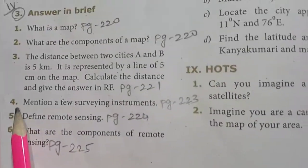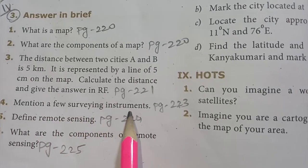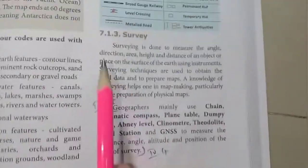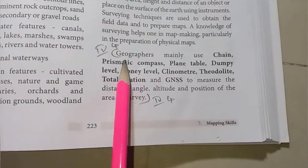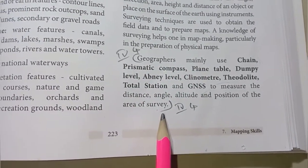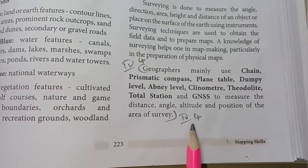Then fourth one, mention a few surveying instruments. Page number 223. Surveying instruments, survey paragraph in the second paragraph, geographers mainly use. Area of survey. Roman numeral fourth one answer.